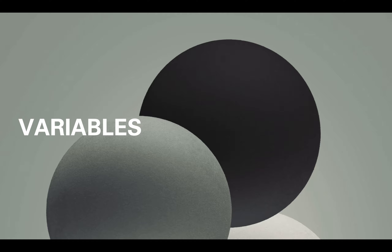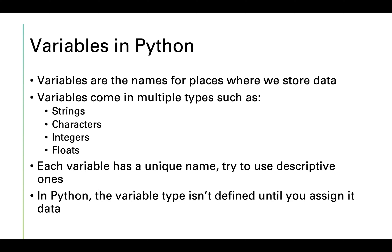Now let's talk about variables. Variables in Python are names for places where we store data. They come in multiple types such as strings, characters, integers, and floats. Each variable has a unique name, so try to use descriptive ones so you know what value is being stored. For example, a variable named 'my favorite number' tells you exactly what it stores. In Python, the variable type isn't defined until you assign it data.